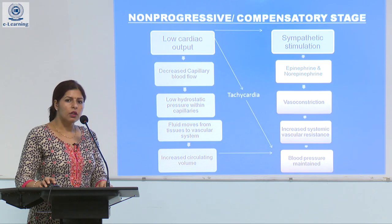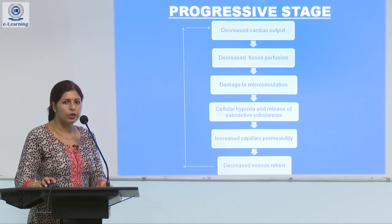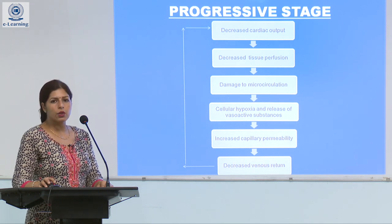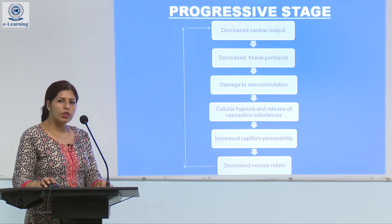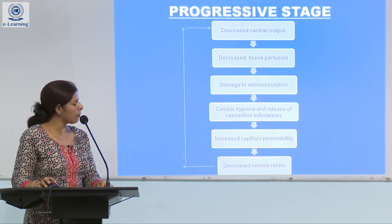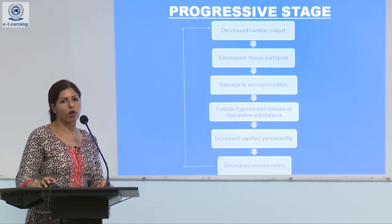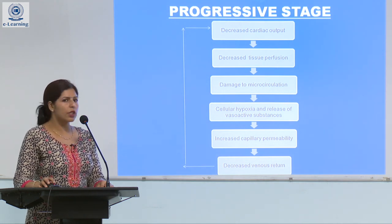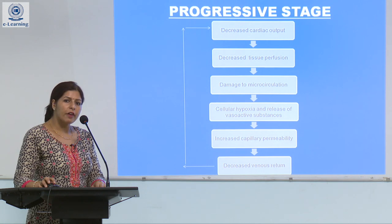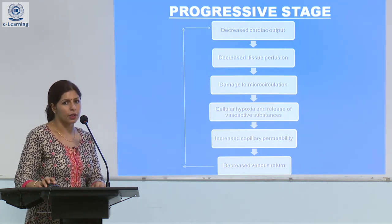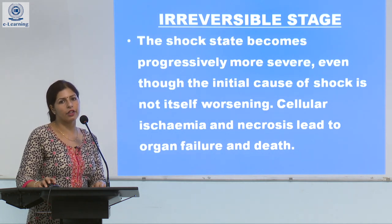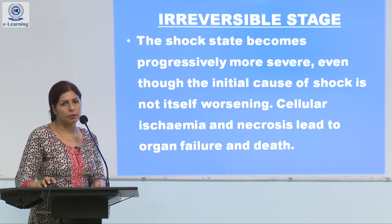However, this compensation is only short term. In the progressive stage, decreased cardiac output leads to decreased tissue perfusion and damage to microcirculation. Cellular hypoxia and release of vasoactive substances lead to an inflammatory response, increased capillary permeability, and further oozing of plasma from the intravascular to the interstitial compartment. This leads to decreased venous return, decreased preload, and further decreased cardiac output. In this stage, intervention such as fluid administration and fluid resuscitation must be carried out. If the compensatory stage is exhausted and no intervention is done in the progressive stage, the patient may slip into the irreversible stage, which may be fatal.